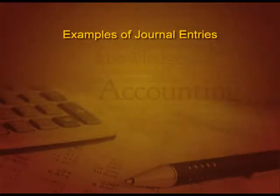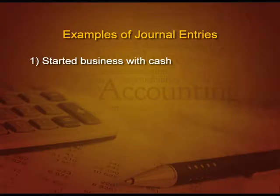Let us see some examples of journal entries. First: started business with cash. Cash is an asset and an asset is debited when it comes in. So, cash account debit and capital account credit, because it is increasing your capital. You can combine these journal entries with the accounting equation to understand why it is being debited and why it is being credited.